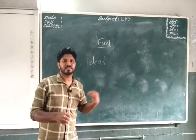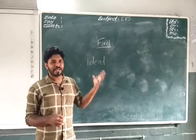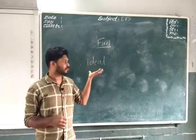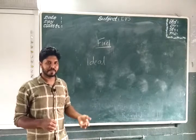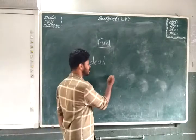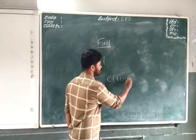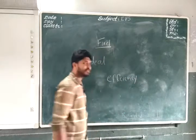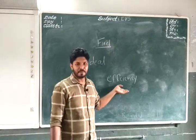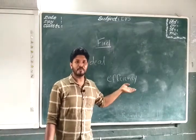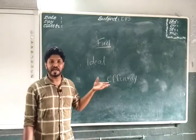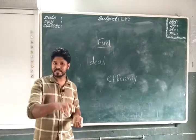The fuel we use at home cannot be an ideal fuel, but we can check how close it is to the ideal fuel. This is done by looking at the efficiency of a fuel. In order to check the efficiency of a fuel, we use a measurement called calorific value — there is a specific calorific value for each fuel.